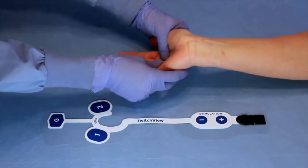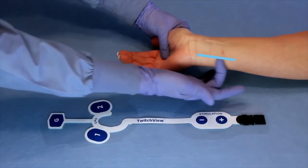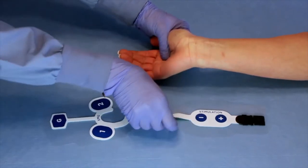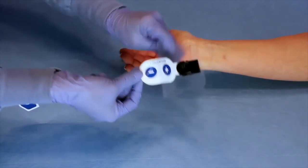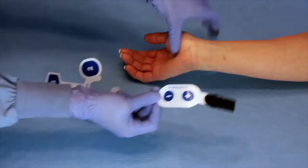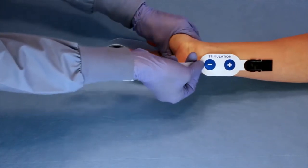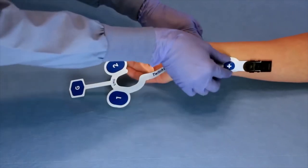To locate the ulnar nerve, extend the patient's wrist and the ulnar groove will become visible. Place the stimulating electrodes directly over the groove just proximal to the wrist crease.